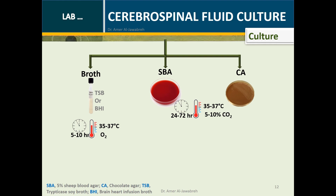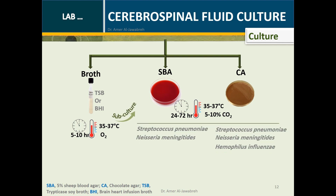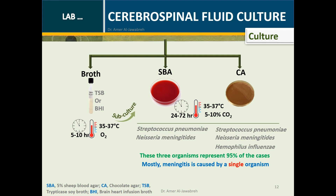Part of the 0.5 mL sediment is plated on sheep blood agar or chocolate agar and incubated. One drop is put into a broth and incubated, then subcultured on SBA and chocolate agar. On SBA we mostly expect Streptococcus pneumoniae or Neisseria meningitidis; on chocolate agar we additionally expect Haemophilus influenzae. These three organisms represent 95% of cases. Meningitis is mostly caused by a single organism. If culture is positive, perform antimicrobial susceptibility testing.